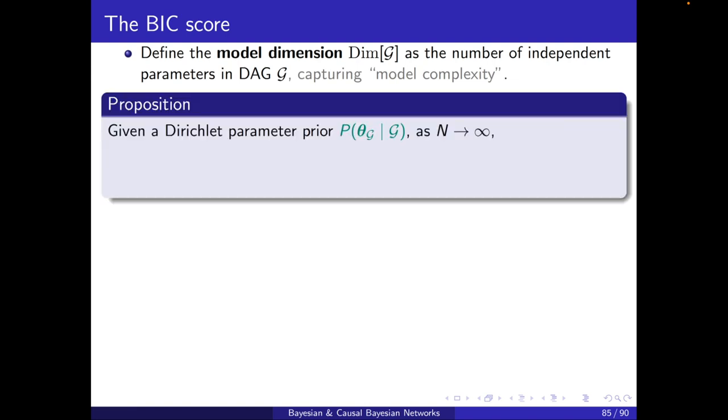We have the following proposition. Given a Dirichlet parameter prior, P(θ_G | G), as the data size converges to infinity, then log of the marginal likelihood can be written as the log of the likelihood, the maximum likelihood estimate, minus 1/2 log of the data size times dimension of G plus an order of 1 other terms.